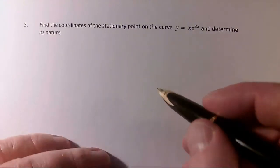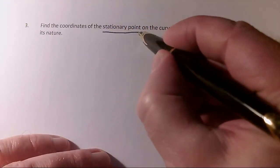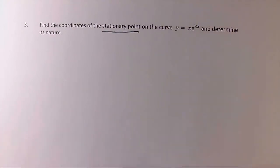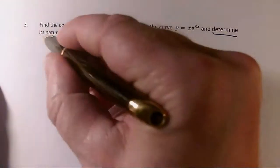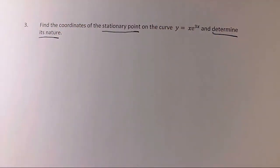There are two things to take notice of in this question. Firstly, we've got to find a stationary point, so we're going to be doing dy/dx equals 0, but we have to determine its nature. So one way of doing that can be to look at the second derivative.